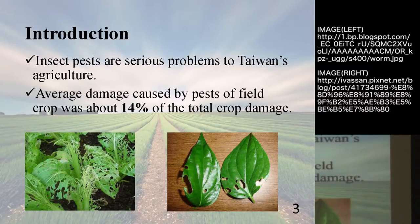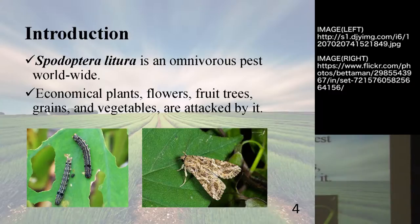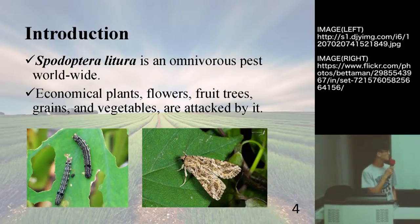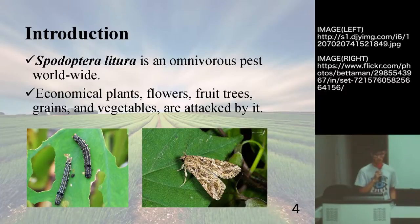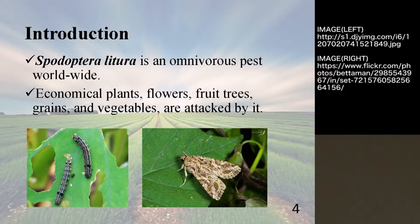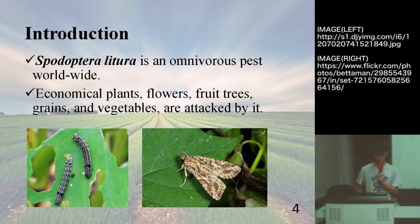Introduction. In fact, insect pests are serious problems to Taiwan's agriculture. The average damage caused by the pests of field crop was about 40% of the total crop damage. And one kind of bug, the Taro Weevil, has worked well. Plants like flowers, fruit trees, and vegetables will be attacked by this bug, so we find some way to know how much they are.